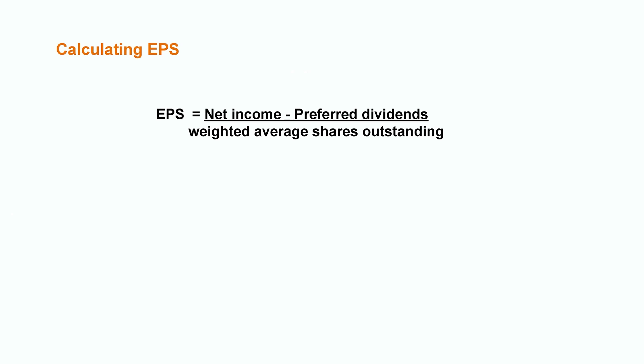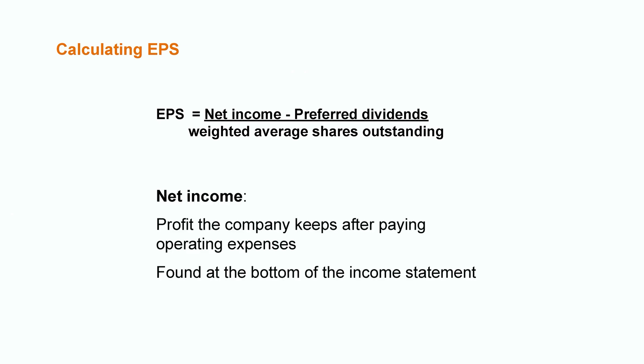Let's briefly talk about each element of the calculation. Net income is the earnings or profit that the company keeps after paying out all of their operating expenses. This number can be found at the bottom of the income statement and is the starting point for our calculation.